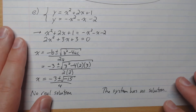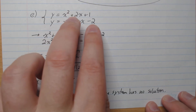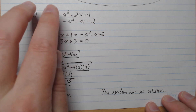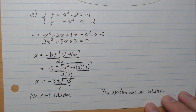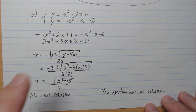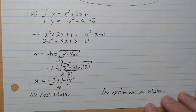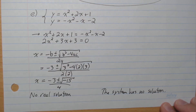Example E: another example with two parabolas. We substitute equation 2 into equation 1 and put it all on one side. Using the quadratic formula with a = 2, b = 3, c = 3, we get the square root of negative 15, which is not a real number. Therefore the system has no real solution.